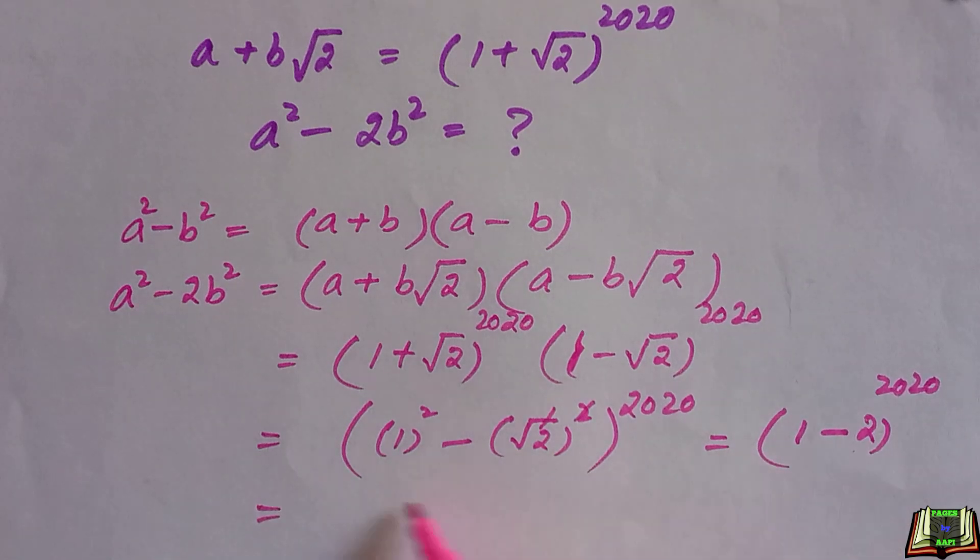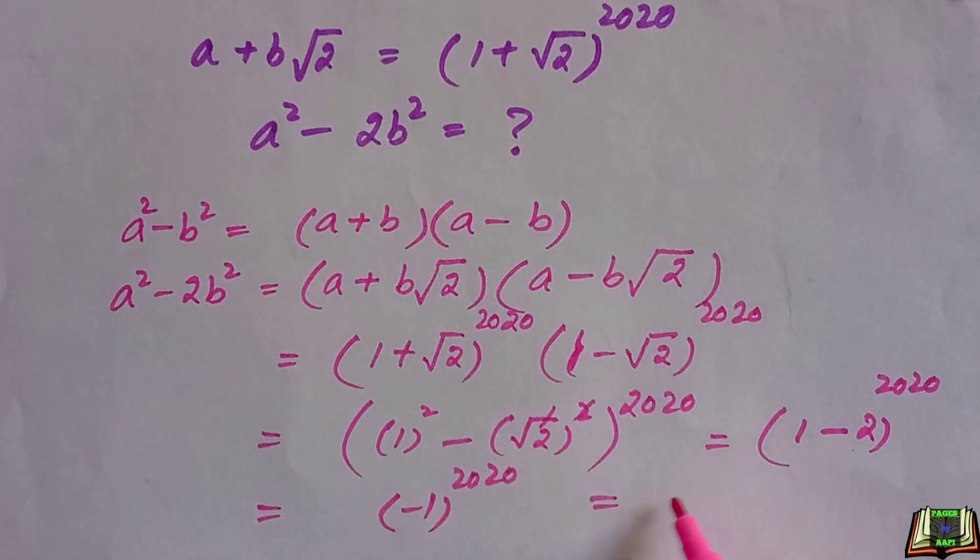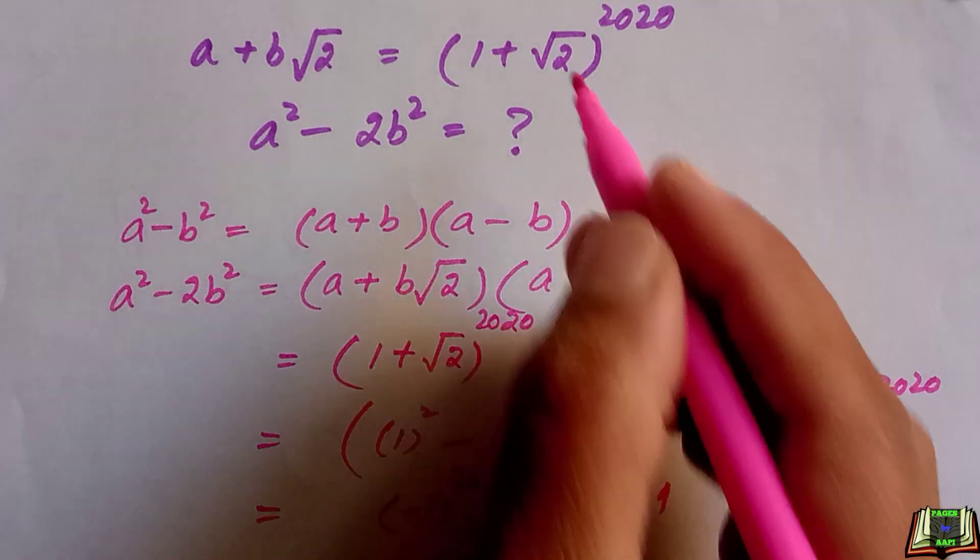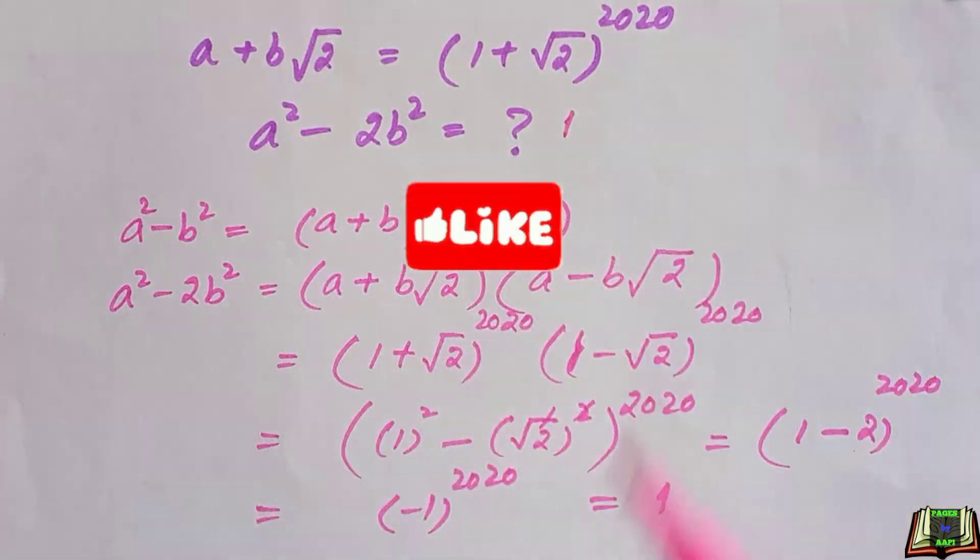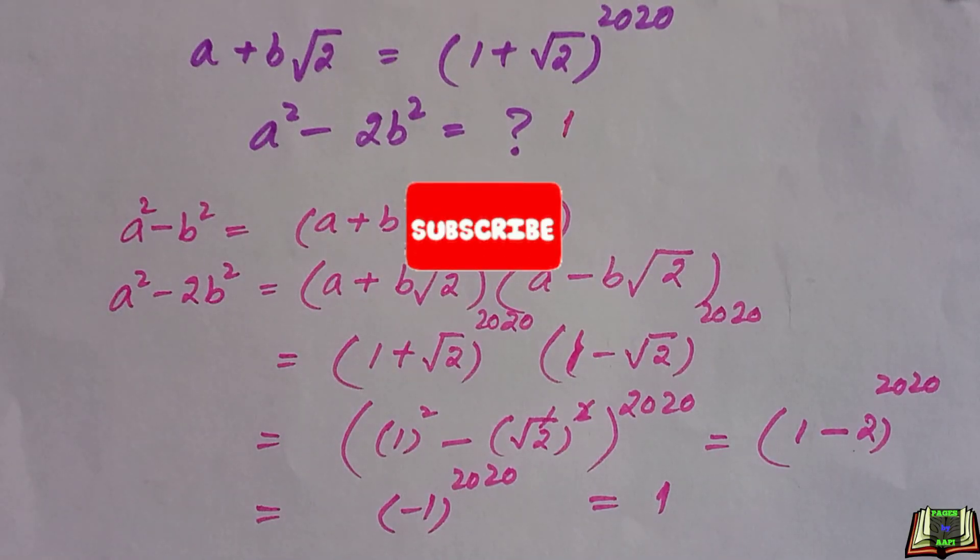1 - 2 is -1, and -1 raised to the power 2020 is equal to 1, which is the required value of a² - 2b². I hope it is clear.